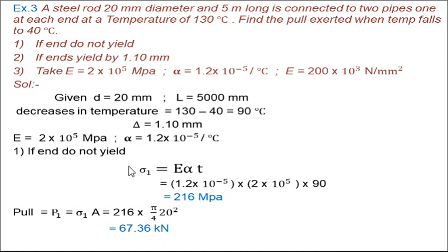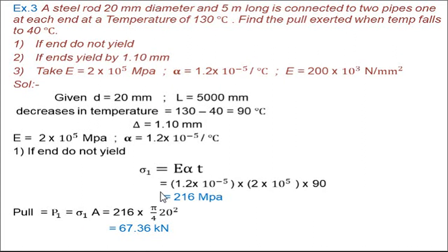Whenever there is a fall in temperature, a pull is exerted. To find the pulling load, we use: load P = sigma × A, where sigma = 216 MPa and A = pi/4 × 20². Putting in the diameter of 20 mm and calculating the cross-sectional area, we find the pull P1 exerted for this temperature drop when the ends do not yield.